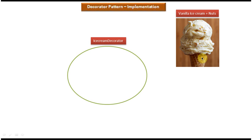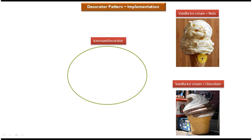Suppose in the Vanilla Ice Cream I want to add Chocolate. Then what this Ice Cream Decorator will do is add Chocolate in the Vanilla Ice Cream and return Vanilla Ice Cream with Chocolate. So as per the Decorator Design Pattern, the Decorator's job is to add additional features to the existing object.